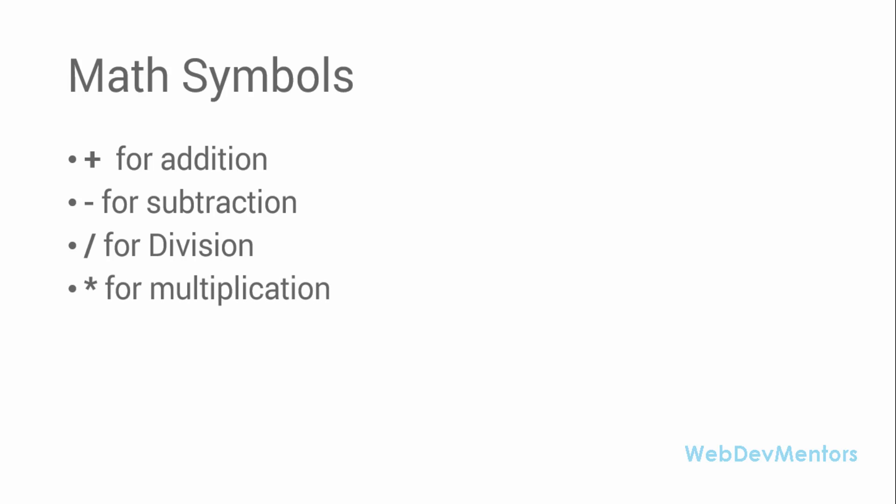Asterisk is for multiplication — if you want to multiply two numbers you can use asterisk. The percentage symbol can be used for finding the modulus value between two numbers.